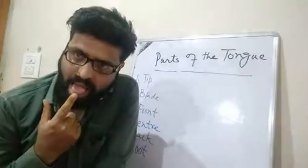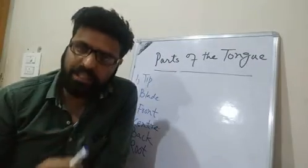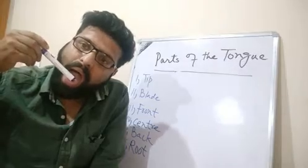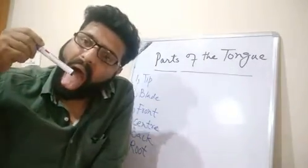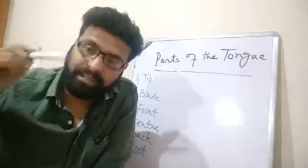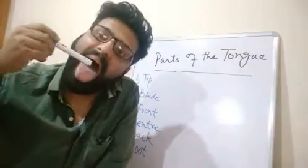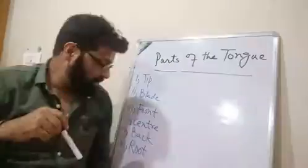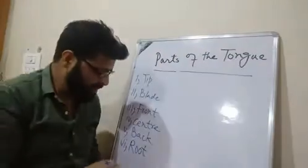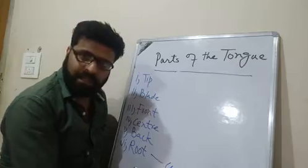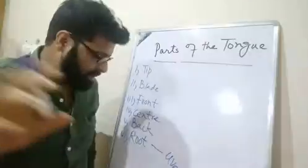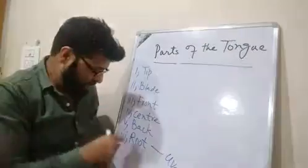Here in this diagram, this part is the tip of the tongue. Then the front of the tongue. This is the center of the tongue. Then the back of the tongue. And that part of the tongue which touches the uvula is the root of the tongue.